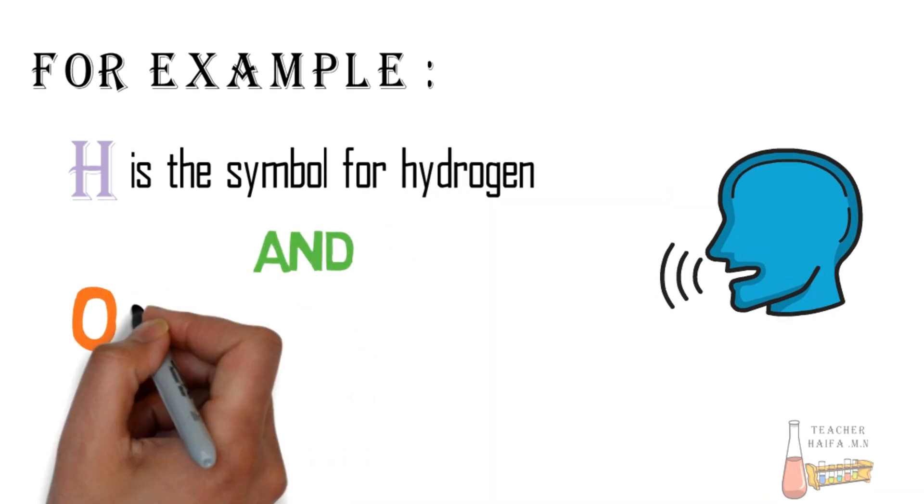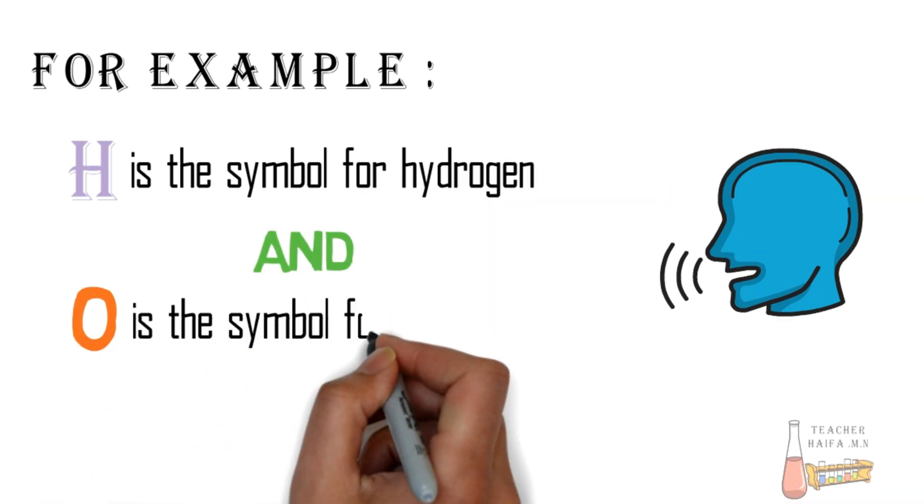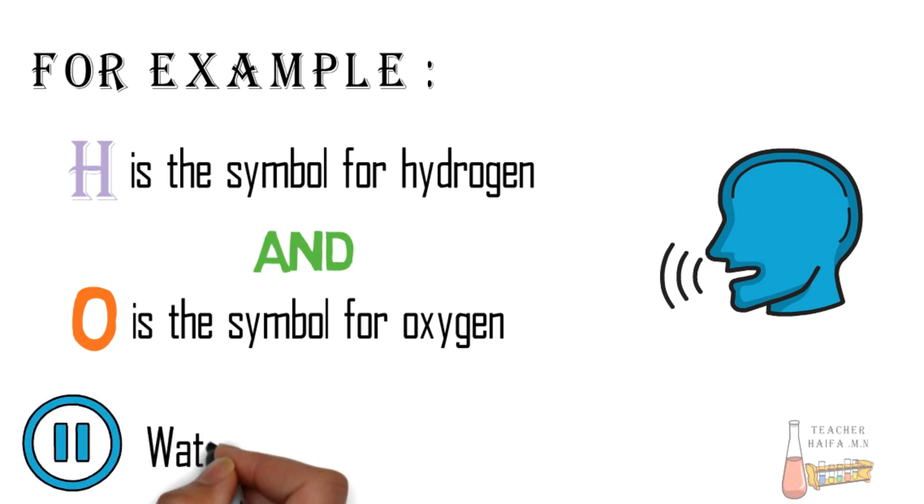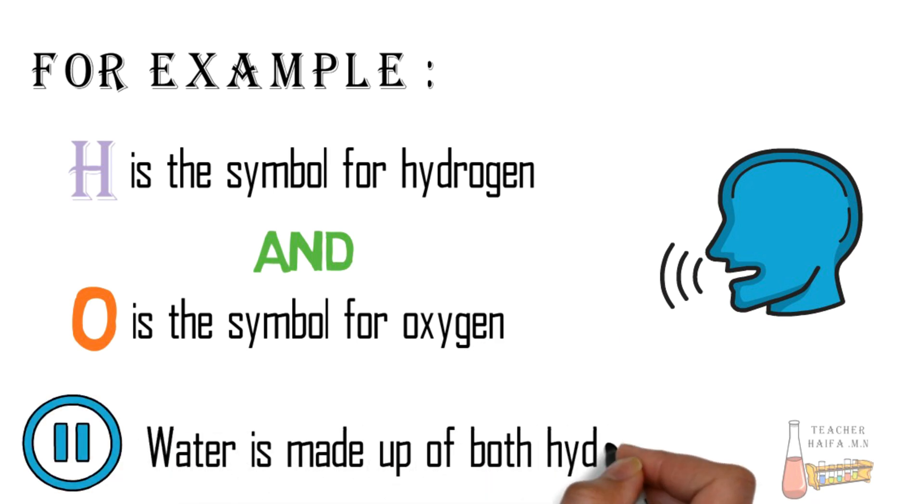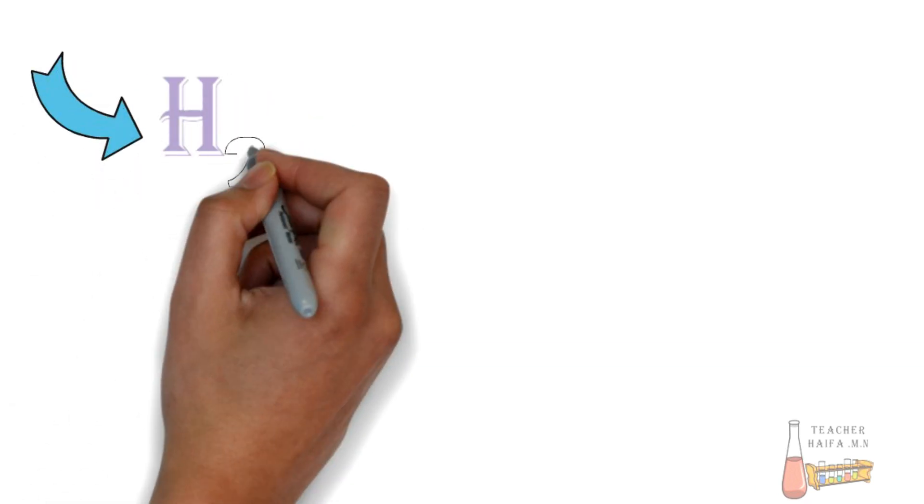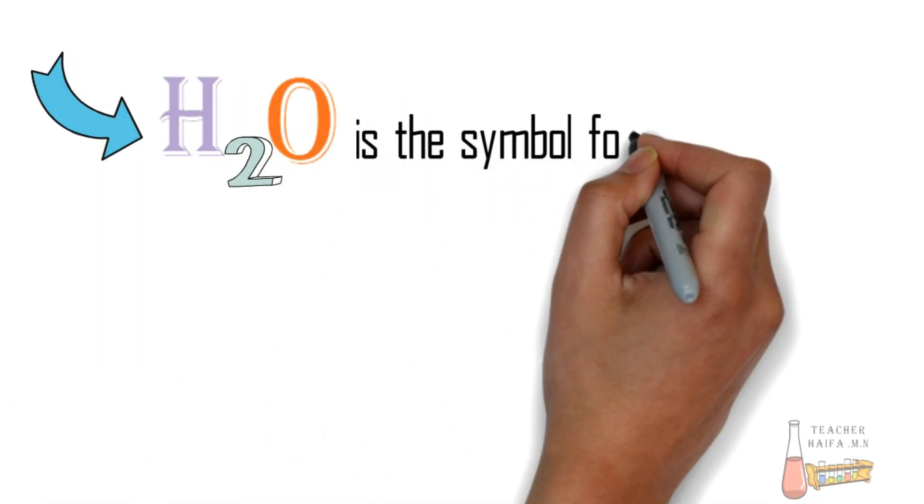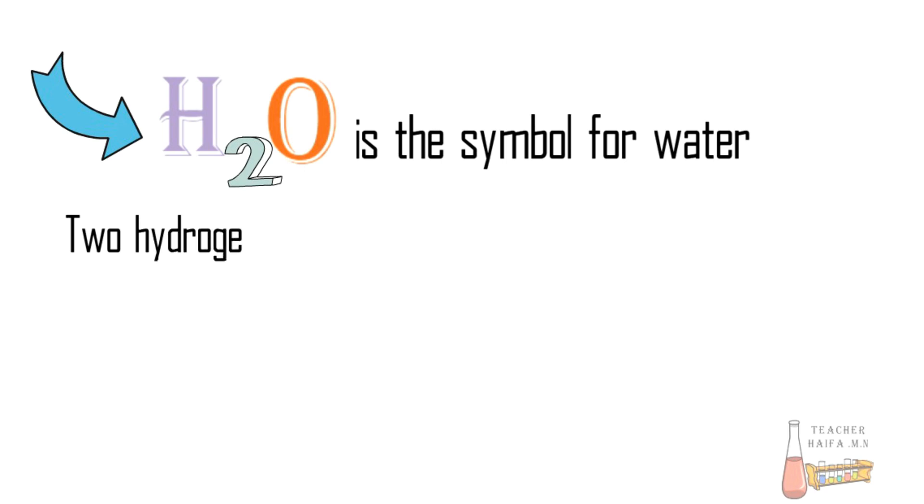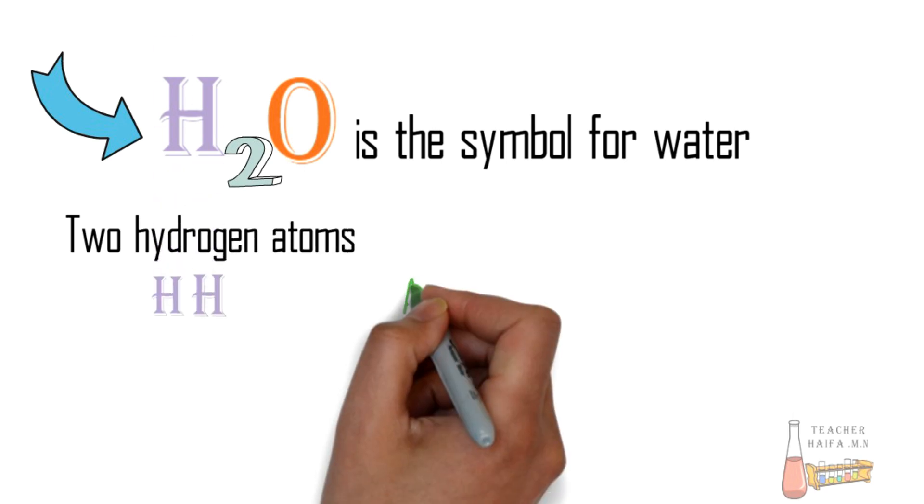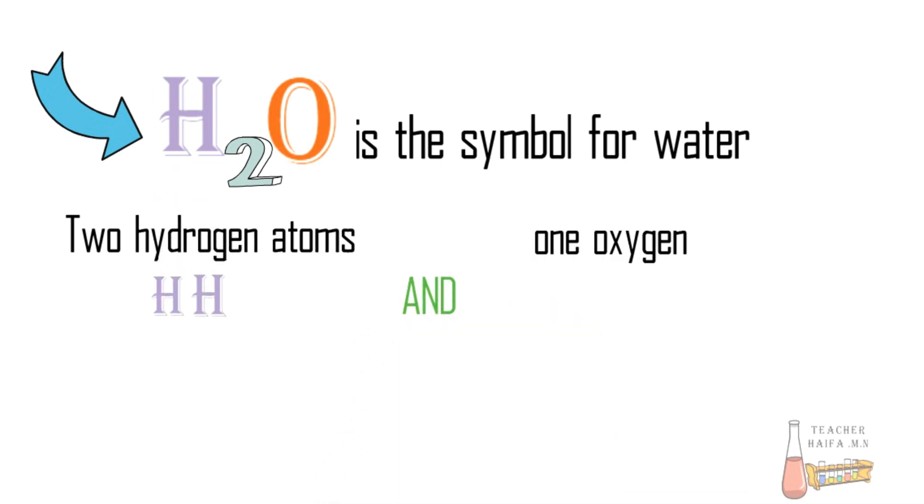Water is made up of both hydrogen and oxygen. H2O is the symbol for water. Two hydrogen atoms and one oxygen atom are bonded together to create a water molecule.